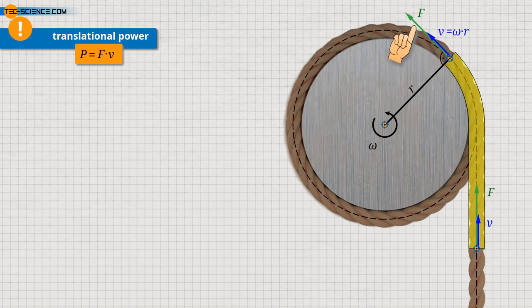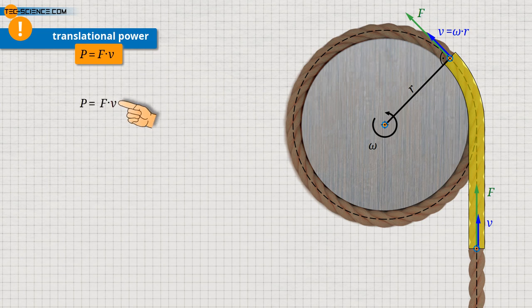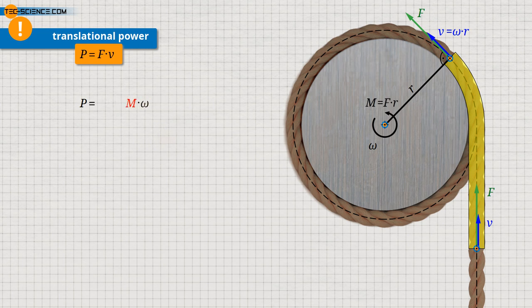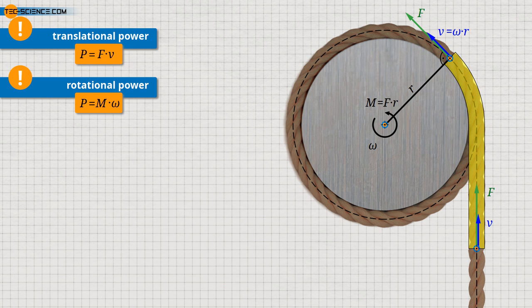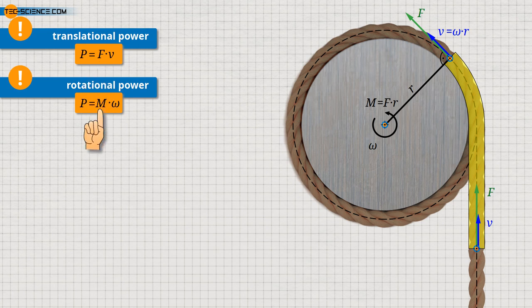The lifting speed of the translatory motion therefore corresponds to the circumferential speed of the rotatory motion. This circumferential speed is directly related to the angular speed: the circumferential speed is the product of the angular velocity omega and the radius r of the circular path. Since the force always acts parallel to the circumferential speed, the power converted during circular motion is the product of force and speed. The product of force and radius corresponds to the torque acting on the drum. Whereas the power of translational motion is determined by force × speed, the power of rotational motion is given by torque × angular speed: P = M × ω.